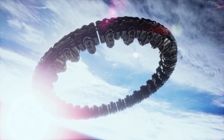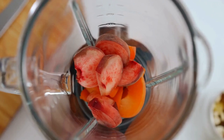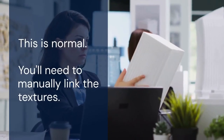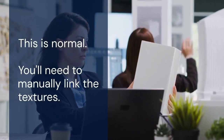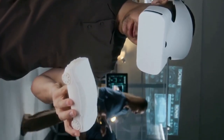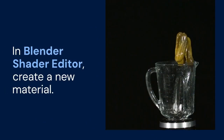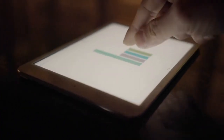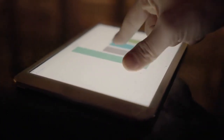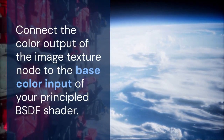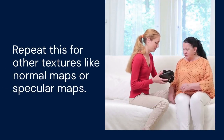Once imported, you'll see the model in your Blender viewport. You might notice that the textures are missing — this is normal. You'll need to manually link the textures, which are usually in the same folder as the .yft file, often as .dds files. In Blender's Shader Editor, create a new material. Add an Image Texture node and load the corresponding .dds texture file. Connect the color output of the Image Texture node to the base color input of your Principled BSDF shader. Repeat this for other textures like normal maps or specular maps.